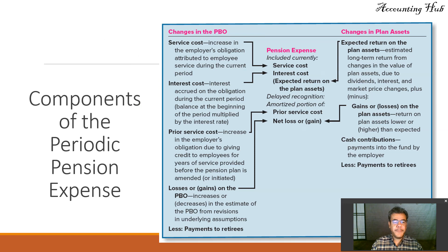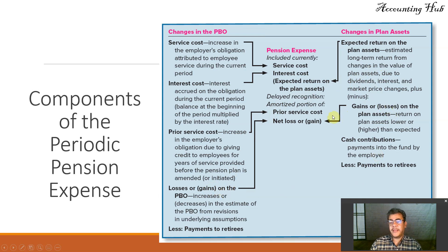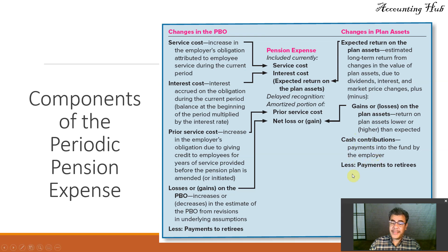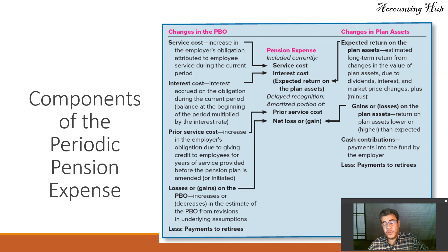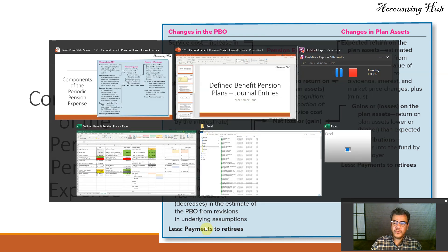The components of the periodic pension expense are: service costs, plus interest costs, less expected return on plan assets, plus amortization of prior service costs, plus losses or gains in the PBO, and gain or losses on plan assets. For the plan asset, we add the cash contribution — how much the company pays to the trustee or bank managing the plan asset — and subtract payments to retirees, which reduces both the plan asset and the PBO. There is no cash involved when paying retirees, because the trustee pays the employee; we only recognize the decrease in plan asset and the decrease in PBO.